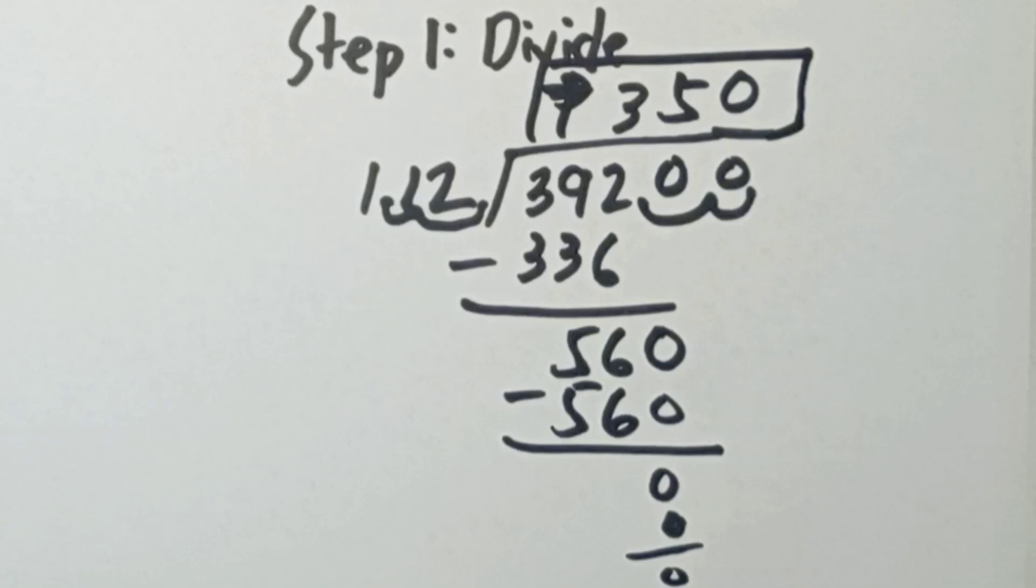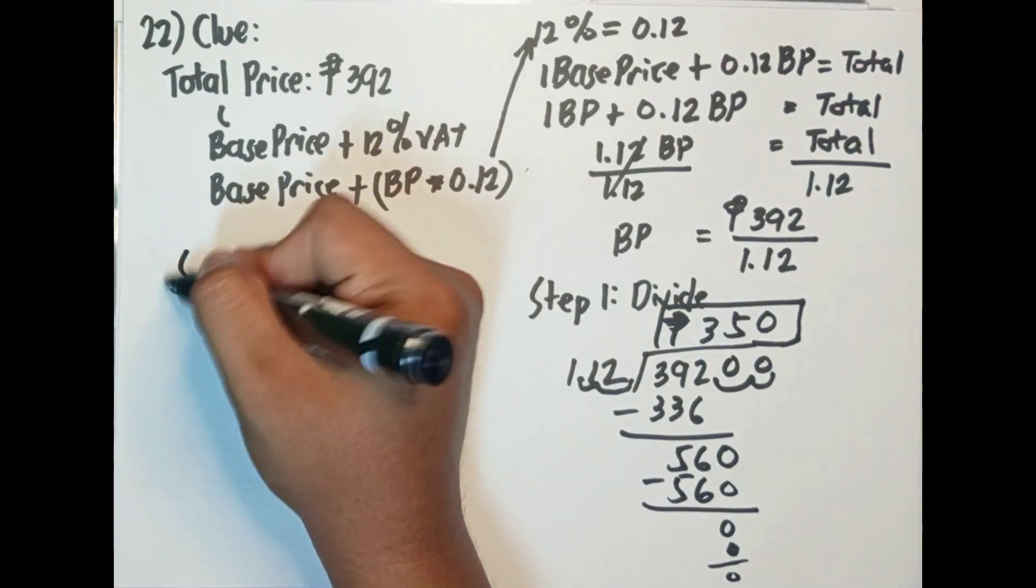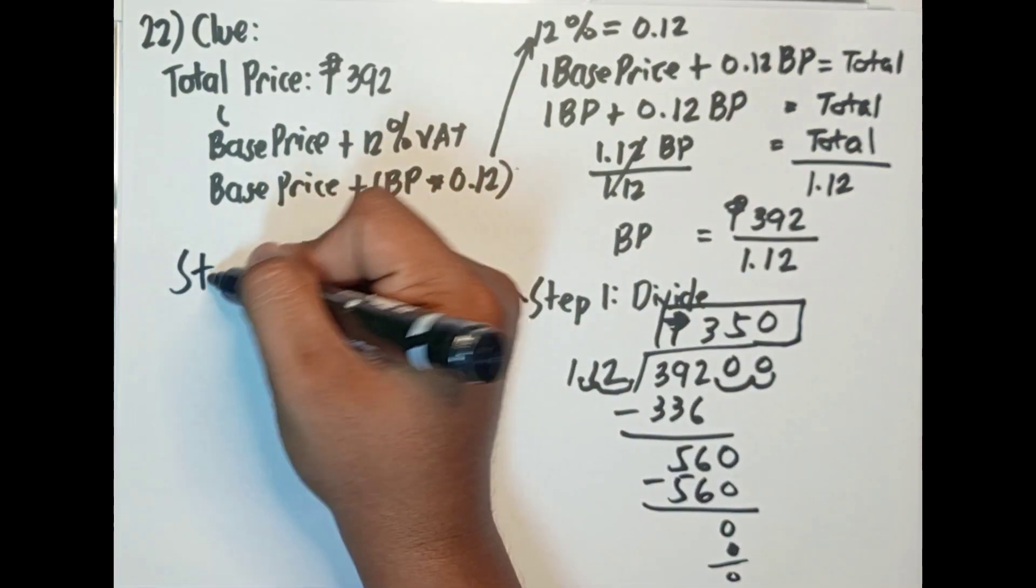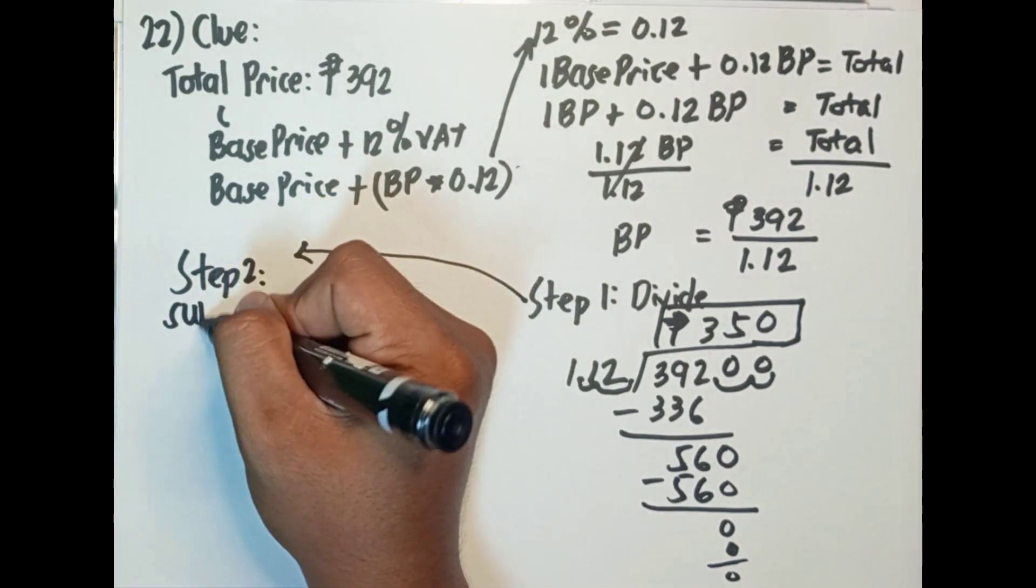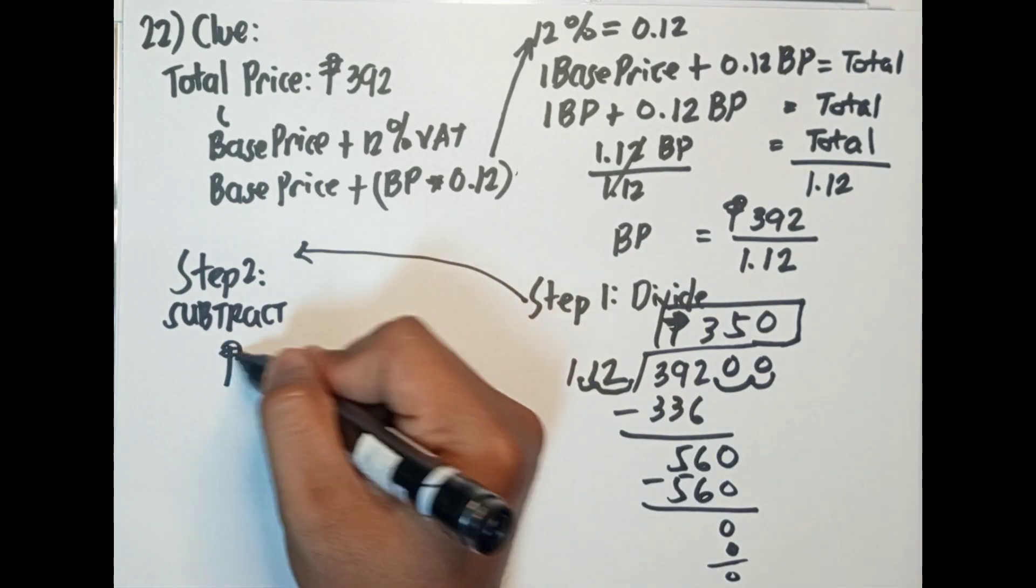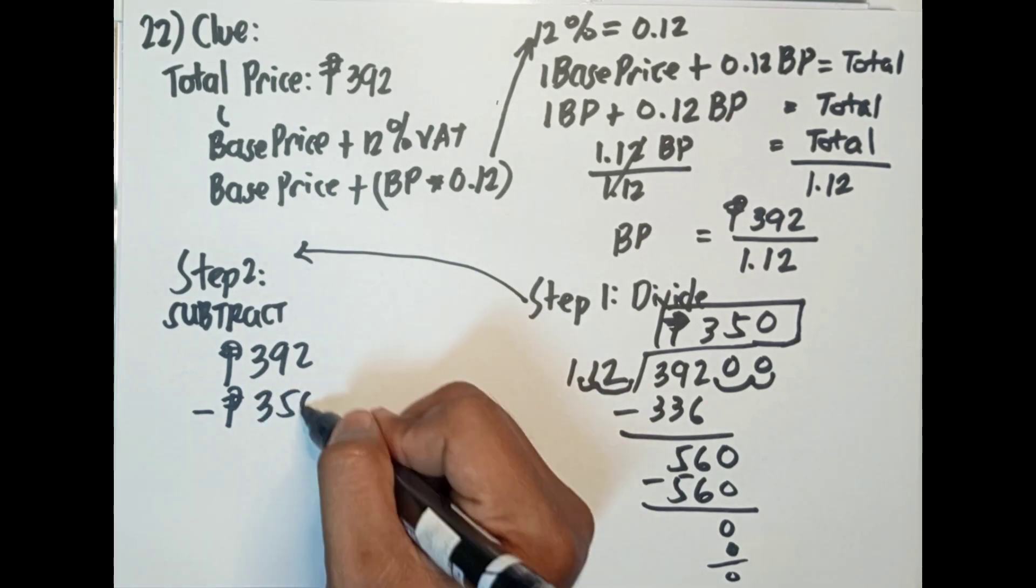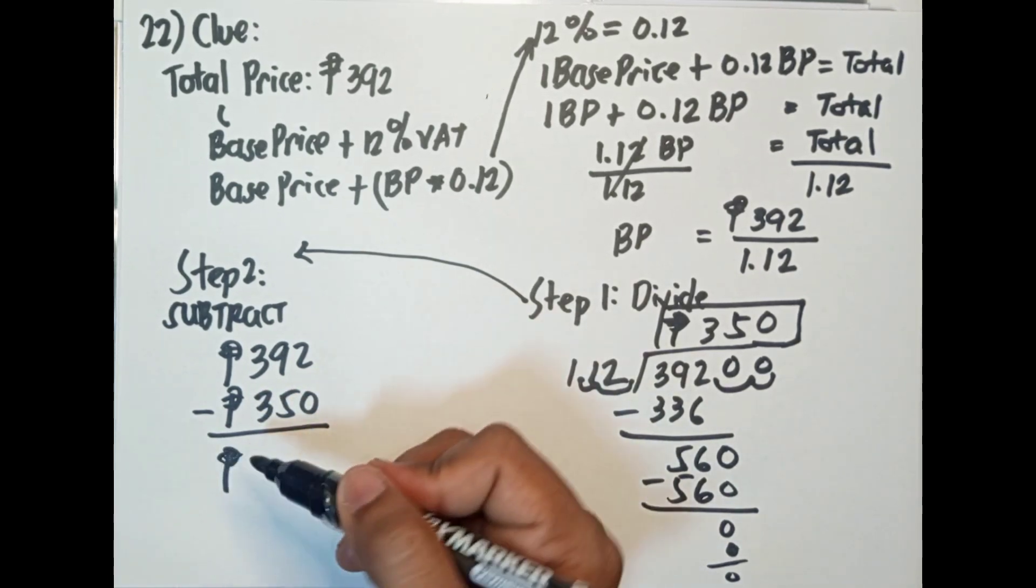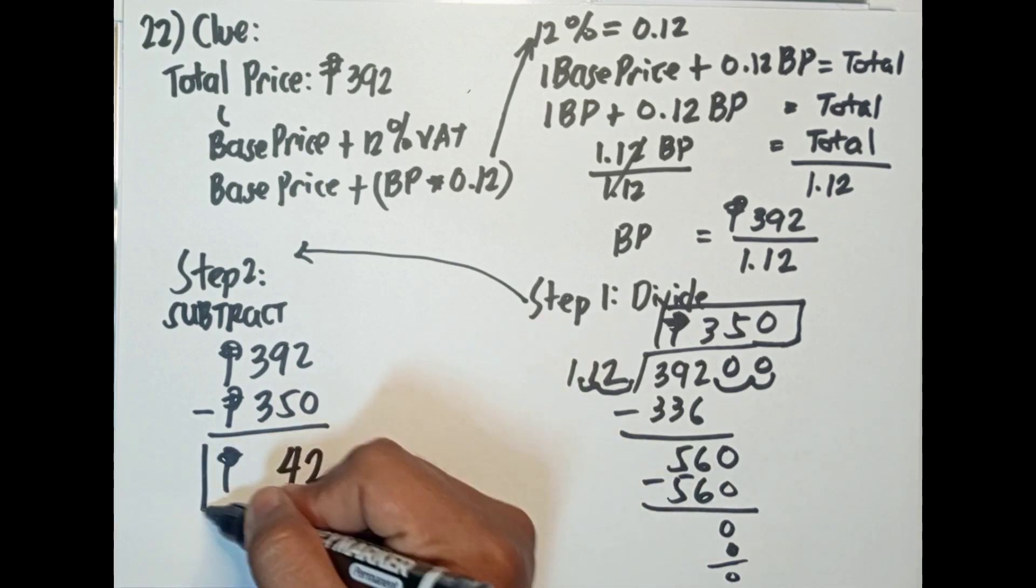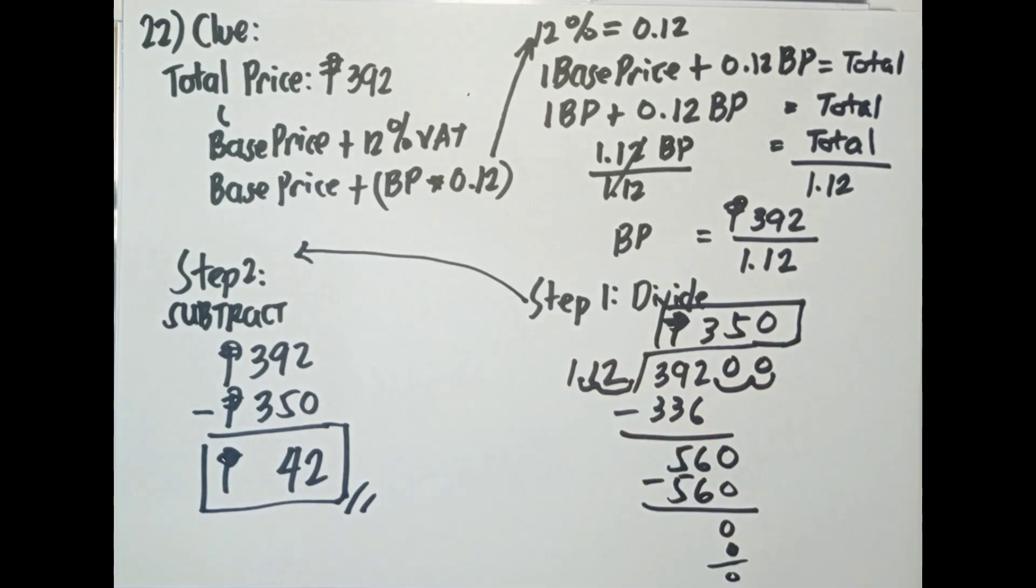Alam mo na kung ano yung base price niya. Para malaman kung ilan yung VAT, edi ima-minus mo lang siya dun sa 392. Yung step 2, subtract. 392 minus 350 kasi yung total price minus yung base price, para malaman mo kung ilan yung VAT. 42. This is the final answer, 42 pesos. Huwag natin kakalimutan yung ating peso sign na.